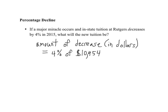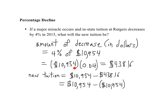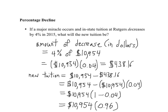Just as a 4% increase means the extra dollars you pay is 4% of current tuition, a 4% decrease means 4% of the current tuition is how many fewer dollars you will have to pay. That turns out to be $438.16. The new tuition will therefore be the old tuition minus $438.16. We can also write this as old tuition times 1 minus 0.04, which equals old tuition times 0.96.